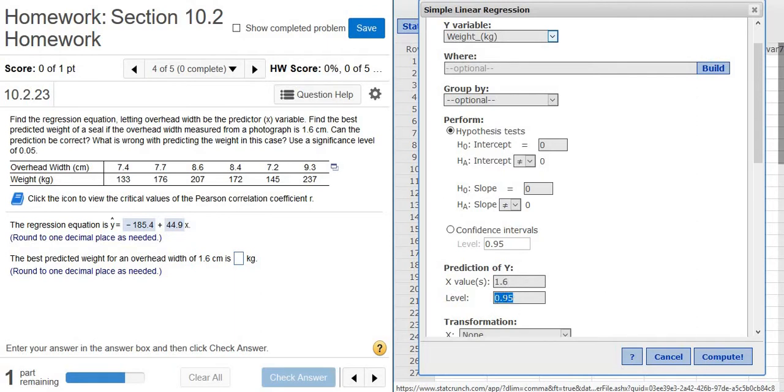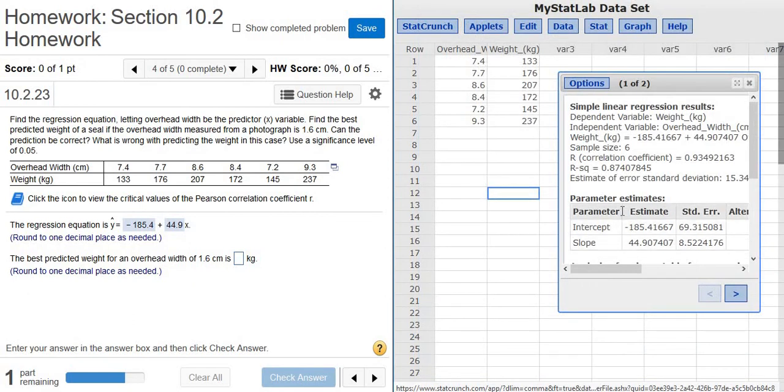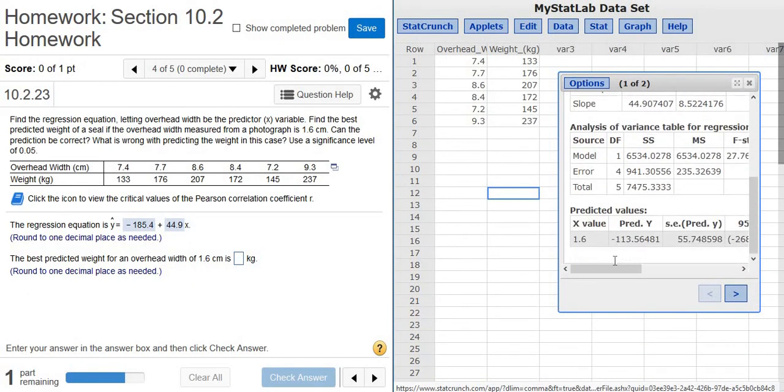Click compute to leave the level alone. What the level does is, I believe this creates a confidence interval for our prediction, which we're not necessarily doing. And then you scroll down, and there it is, right there, pred y.